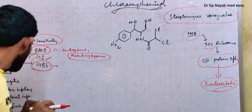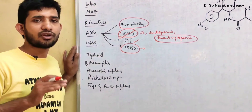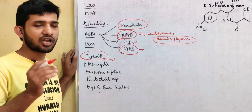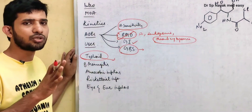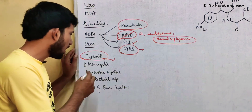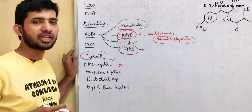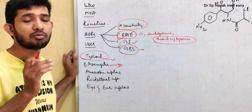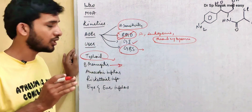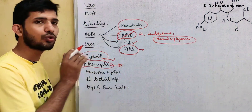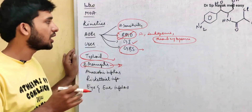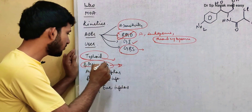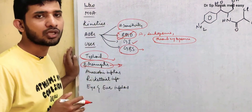Regarding chloramphenicol uses: previously we used chloramphenicol for typhoid, but nowadays for typhoid we have third-generation cephalosporins, and ceftriaxone is the drug of choice for typhoid, so we no longer use chloramphenicol for typhoid. Since chloramphenicol is also concentrated in the cerebrospinal fluid because it crosses the blood-brain barrier, in bacterial meningitis we can use chloramphenicol, but the doses and all ADRs should be keenly monitored.